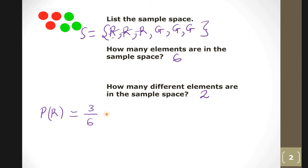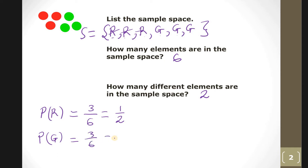Of course you have to simplify that, which gives you a half. What is the probability of getting a green? It's the same — three out of six, which is a half. Very simple.